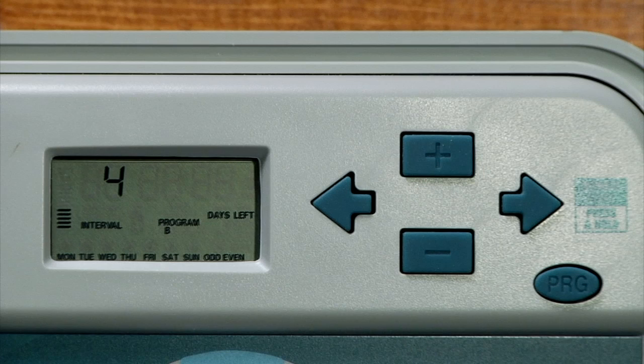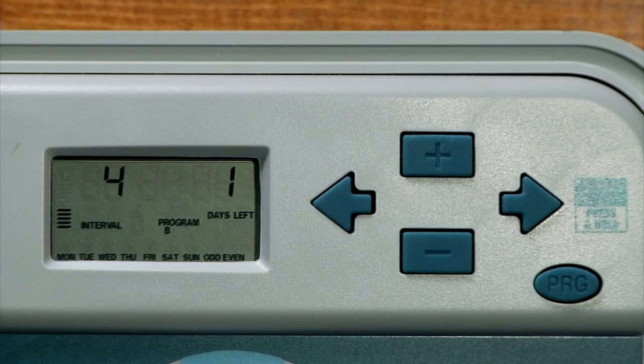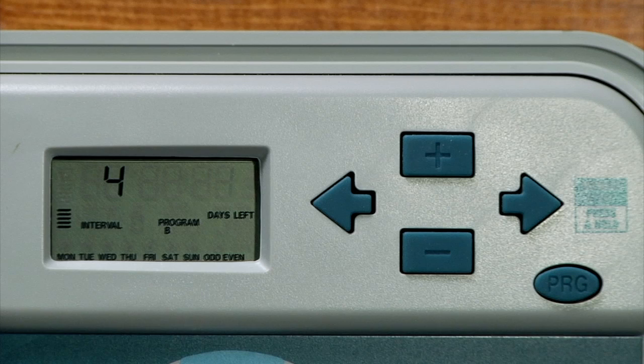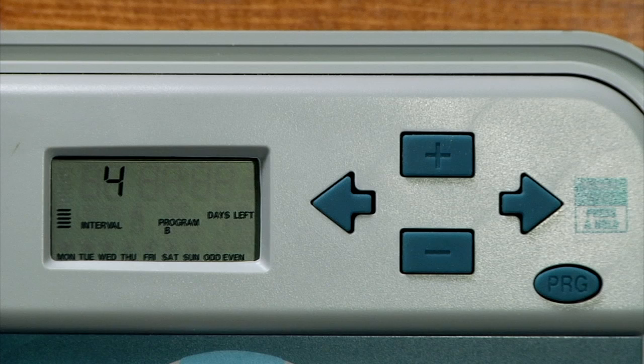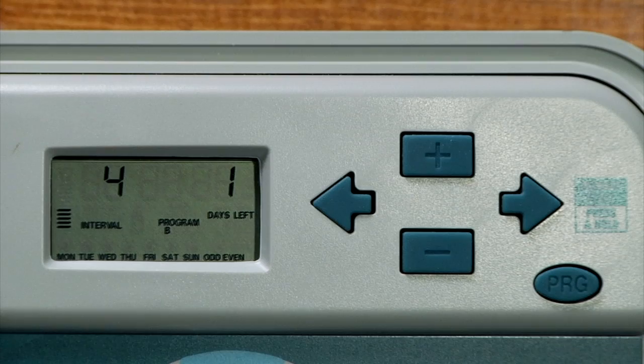The zero day is the water day. The interval of four will never change—it'll water every four days. We know that. What will change is the days left. It'll count down from three days, two days, one day, zero, and zero is the water day. Then it repeats back to three, two, one, zero.